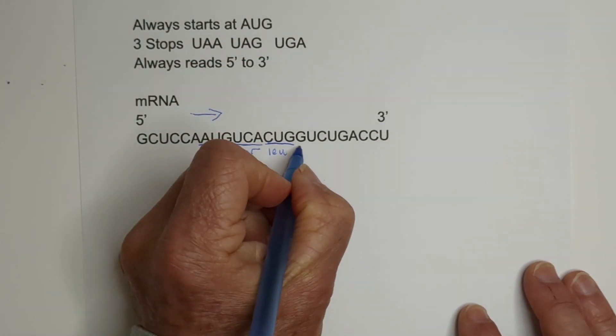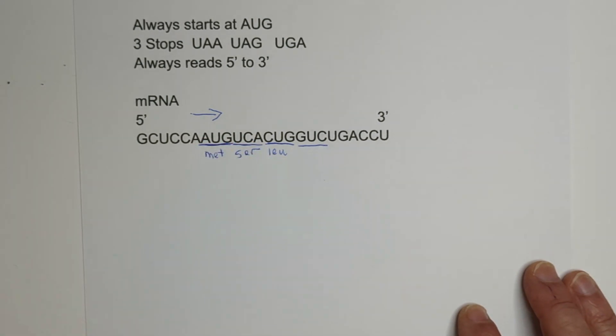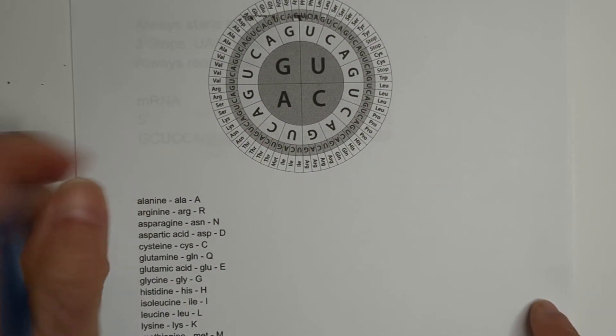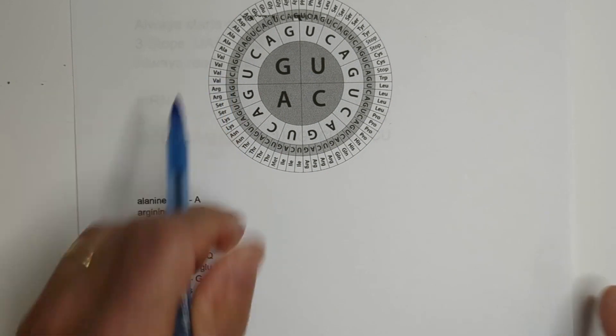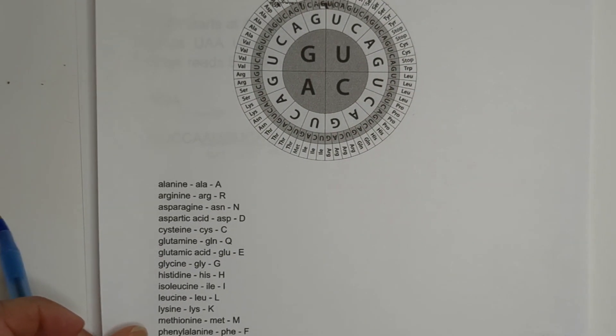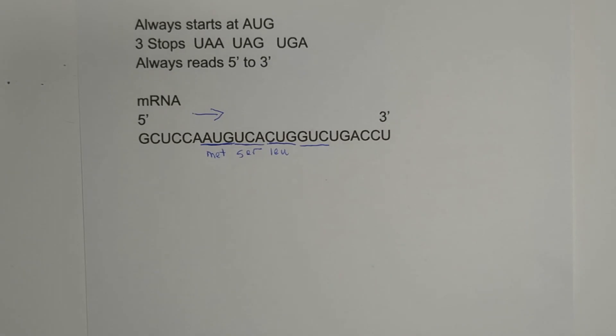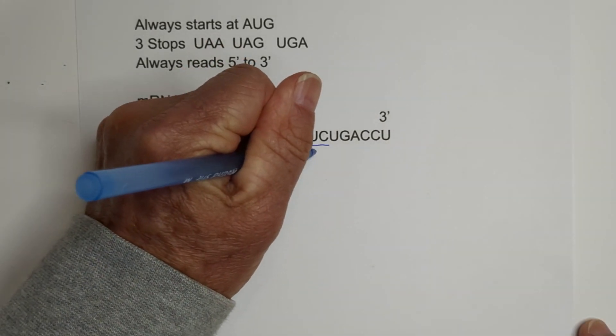And I know that's leucine, and then now we have GUC, and we'll go to GUC, GUC, that's VAL. VAL is valine, so we'll go VAL,